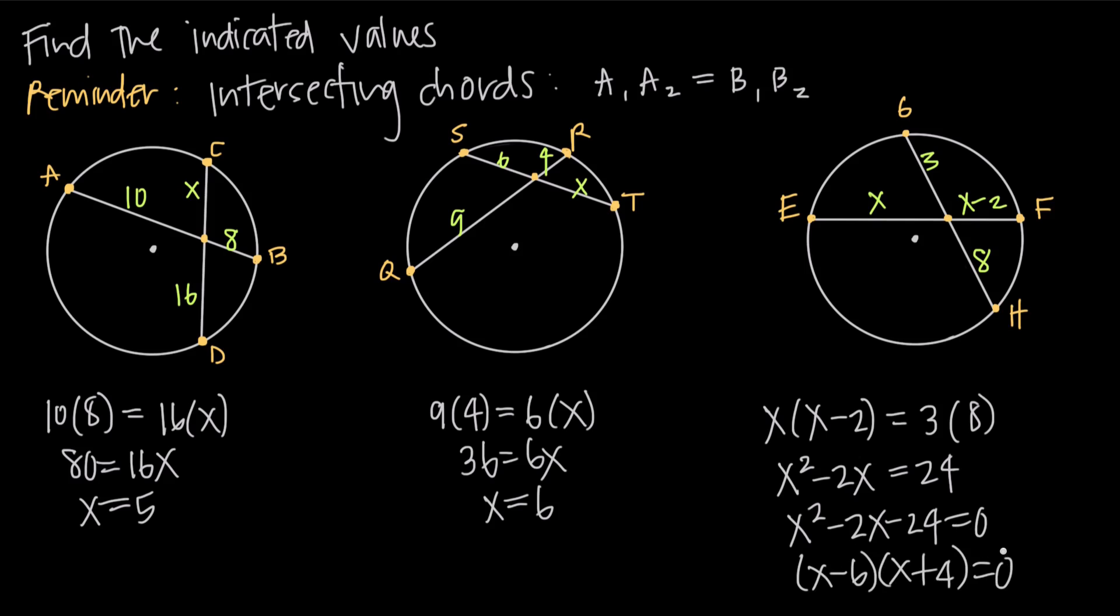And then if I set each of these factors individually equal to 0, I can say x minus 6 equals 0 or x equals 6. And x plus 4 equals 0 or x is equal to negative 4. So I have two possible solutions for x. I need to test them in my circle here to figure out which one is the correct solution.